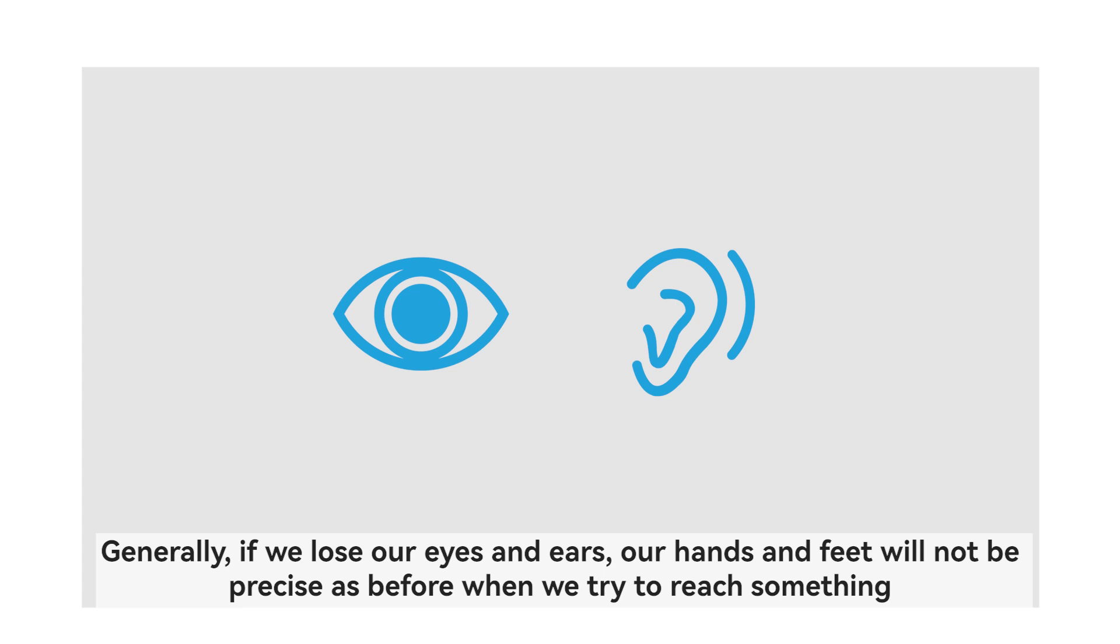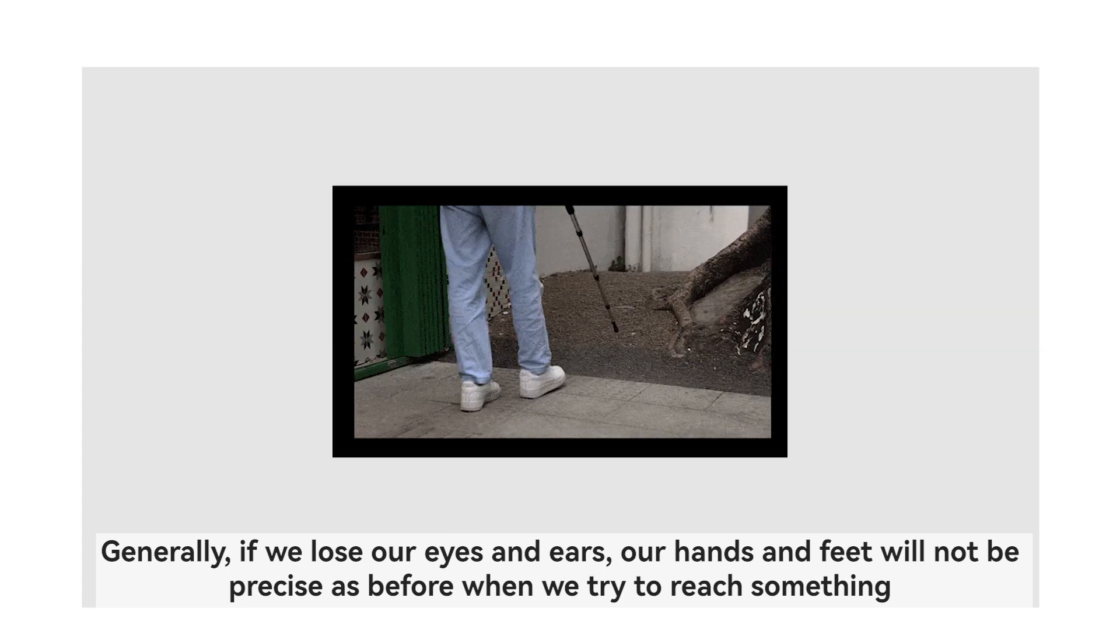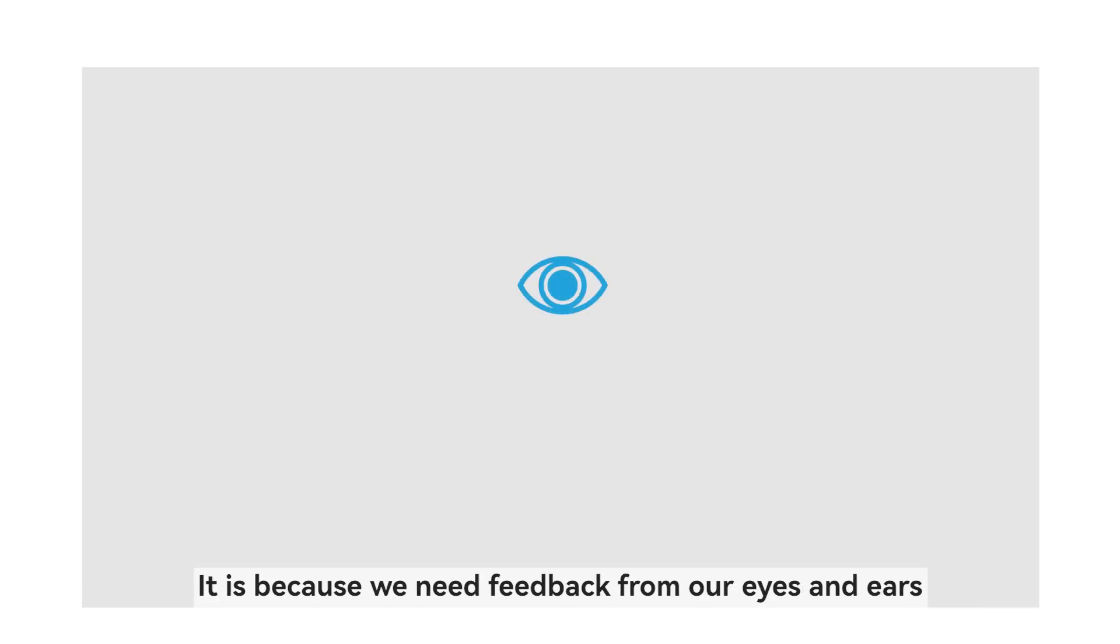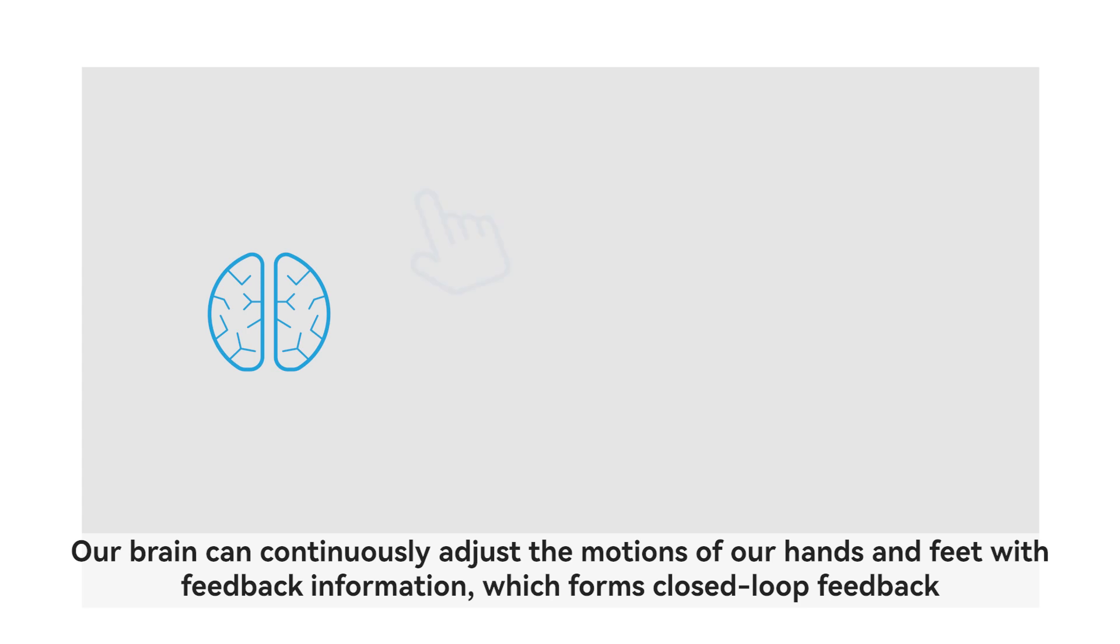Generally, if we lose our eyes and ears, our hands and feet will not be precise as before when we try to reach something. It is because we need feedback from our eyes and ears. Our brain can continuously adjust the motions of our hands and feet with feedback information, which forms closed-loop feedback.